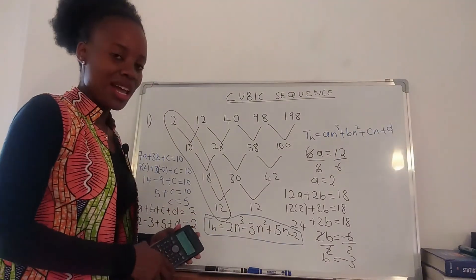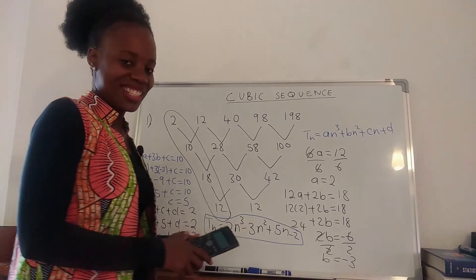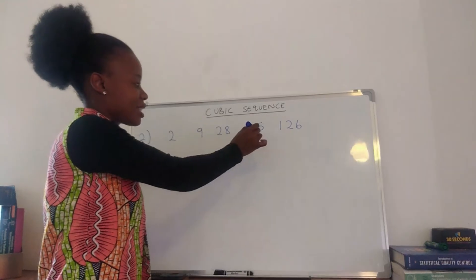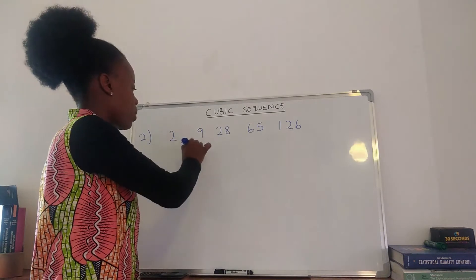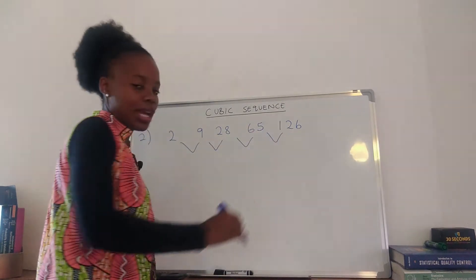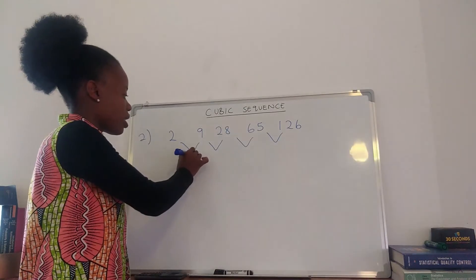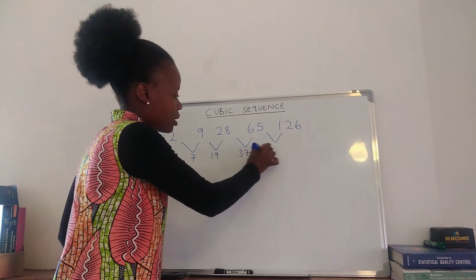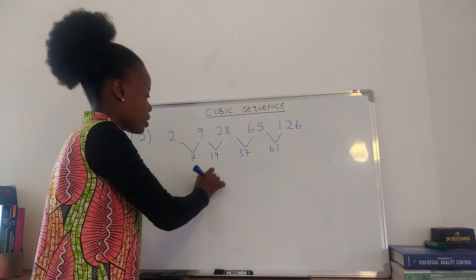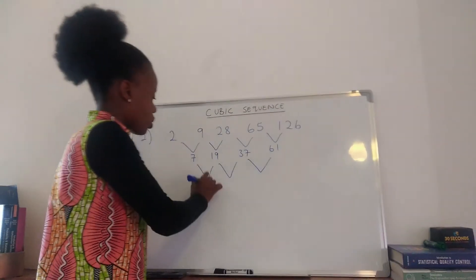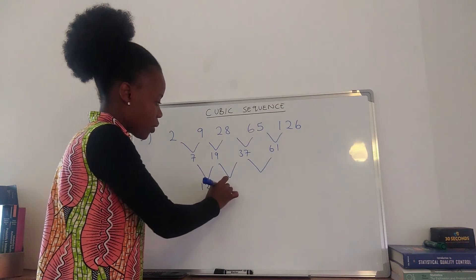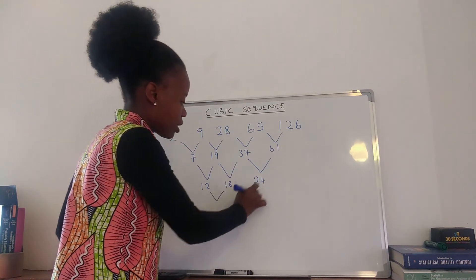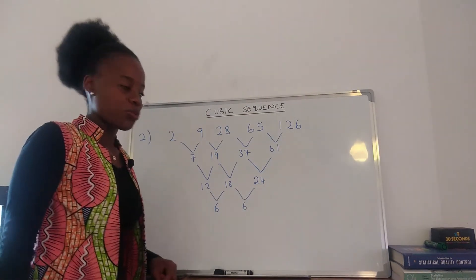Now let's look at number 2. We have the sequence 2, 9, 28, 65, 126. Finding the first differences: 7, 19, 37, 61. The second differences are 12, 18, 24. The third difference is 6.